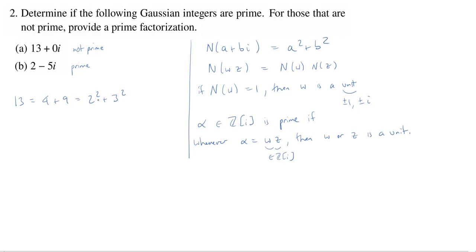Because the sum of squares means you're a norm of something. For example, 13 here might be the norm of 2 plus 3i. It could be negative 2 plus 3i, or 2 minus 3i, or negative 2 minus 3i. Any one of them will work.